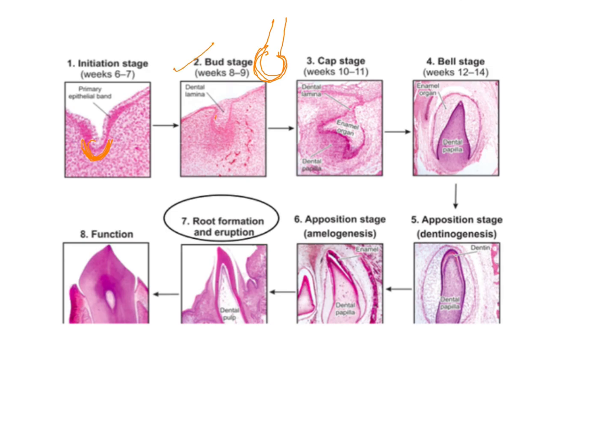After the bud stage you have the cap stage. In the cap stage the entire structure with the outer and inner enamel epithelium as well as the stellate reticulum present in the center — that entire structure is called the enamel organ. This enamel organ is connected to the oral ectoderm with the help of the dental lamina. After that the cap stage proceeds to form the early bell stage, and after the early bell stage it forms the advanced bell stage.